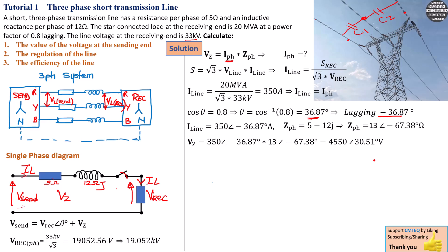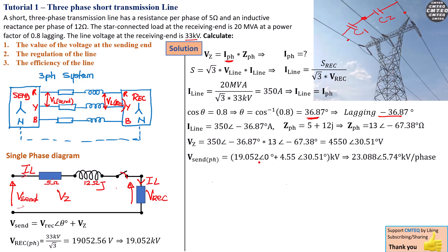This voltage drop is basically 4.5 kilovolts. We now have everything needed to calculate the voltage at the sending end: VS = 19.052 kV ∠0° + 4.55 kV ∠30.51°. The receiving end voltage has an angle of 0 degrees as the reference. Working it out, we find a per-phase voltage at the sending end of 23.088 kilovolts ∠5.74°.